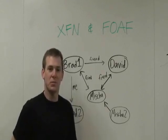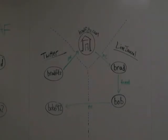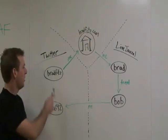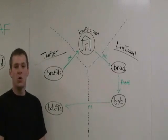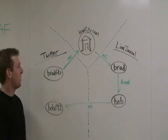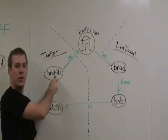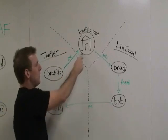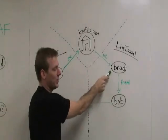I'll show you my favorite example. So let's say I just joined Twitter. Here I am on Twitter, and I'm lonely because I have no friends. So what either Twitter or myself as a developer can do is use the Social Graph API and follow the links from my Brad Fitz URL and see where they go. So there's a me link to BradFitz.com, which has a me link to my LiveJournal.